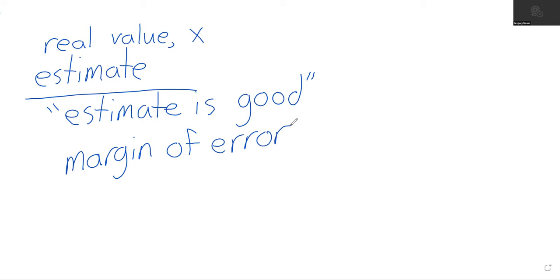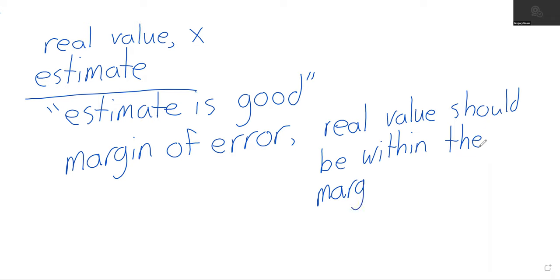So the margin of error is a number. And this number is supposed to be telling you how good the estimate is. In particular, the real value should be within the margin of error of the estimate. And this probably sounds like a nightmare sentence.